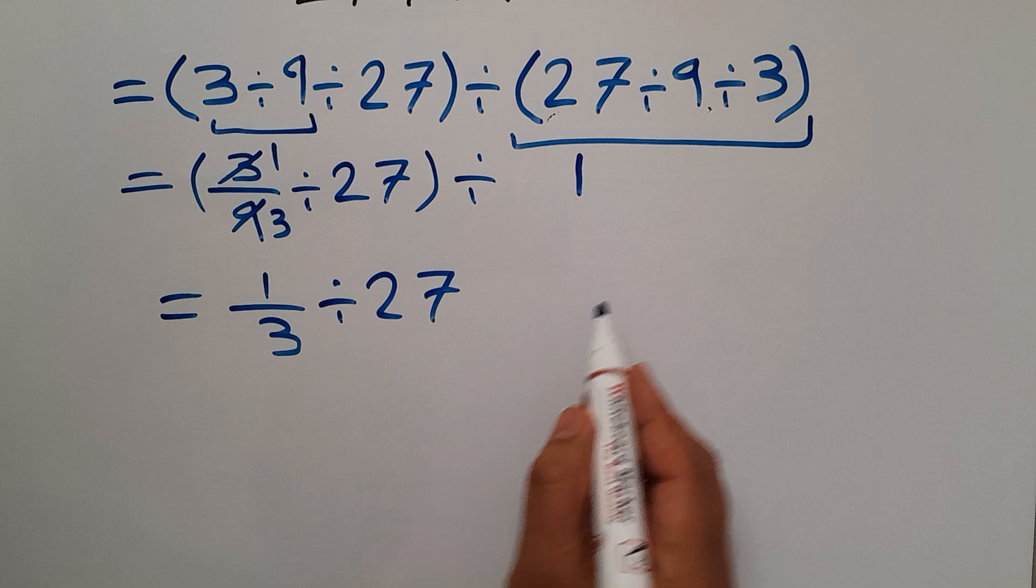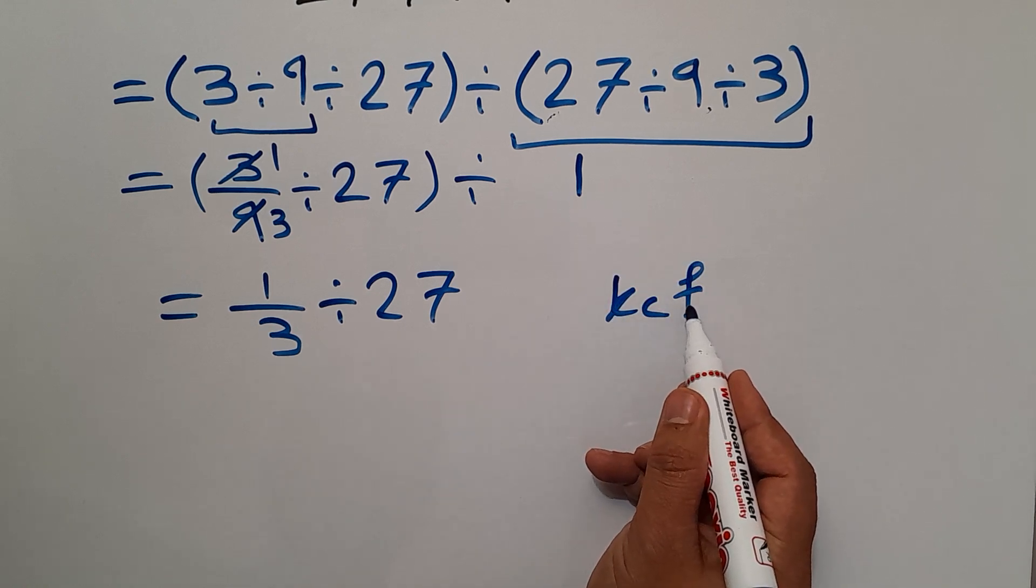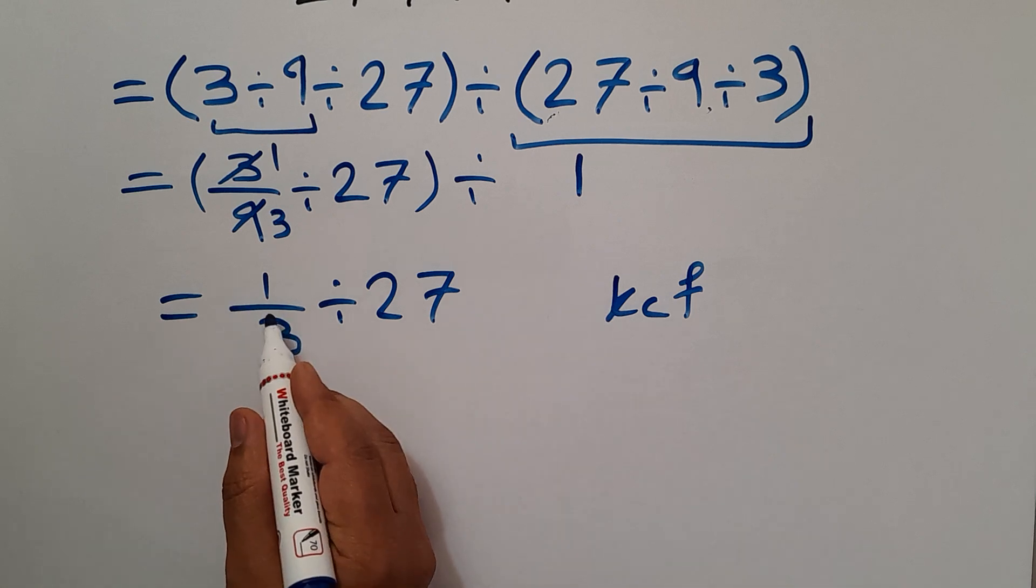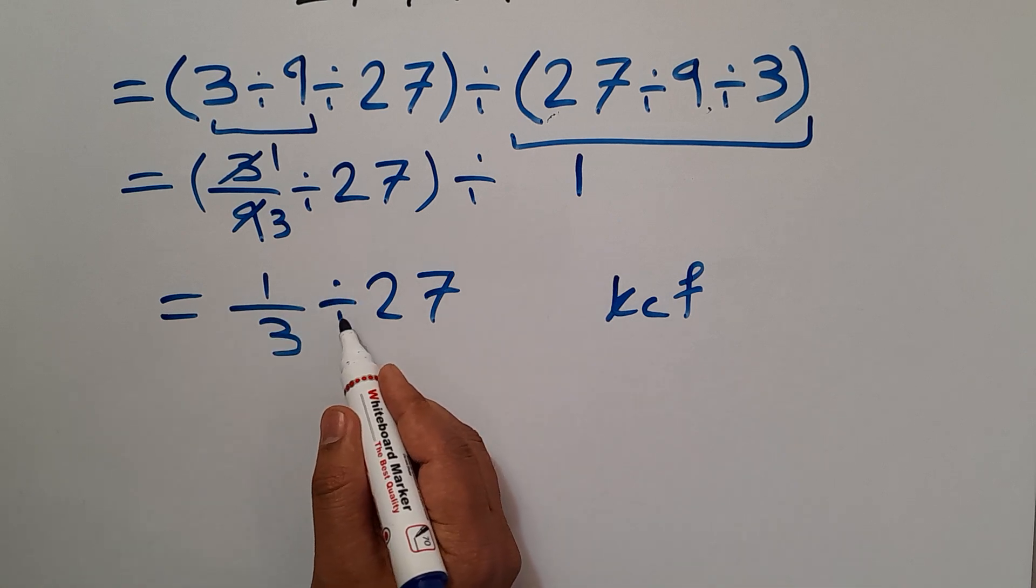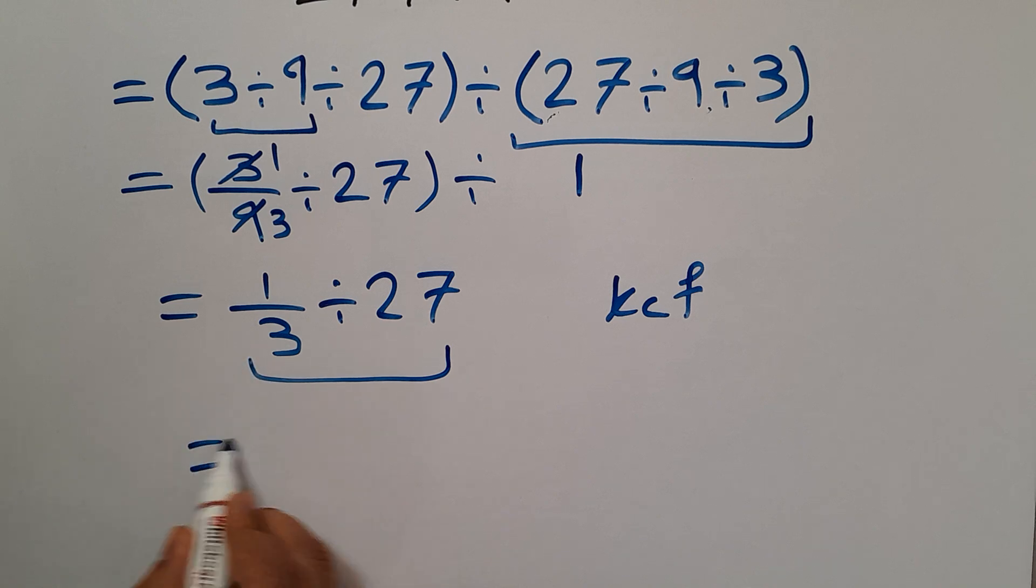And now according to the KCF rule: K stands for keep, C stands for change, and F stands for flip. Keep the first fraction, change division to multiplication, and flip the second fraction. We can write 1 over 3 times 1 over 27.